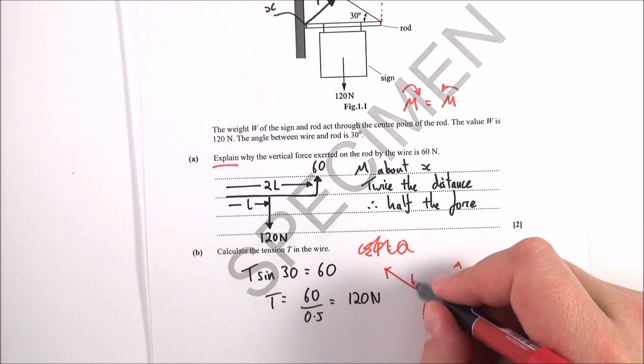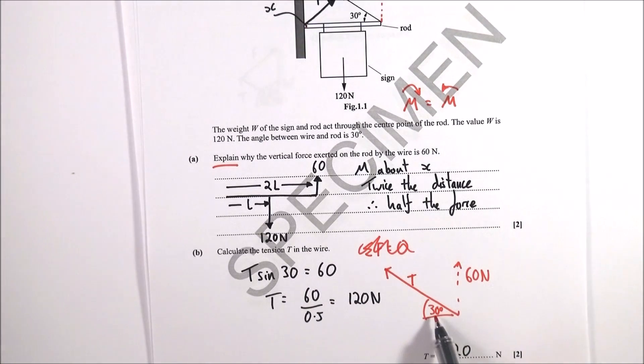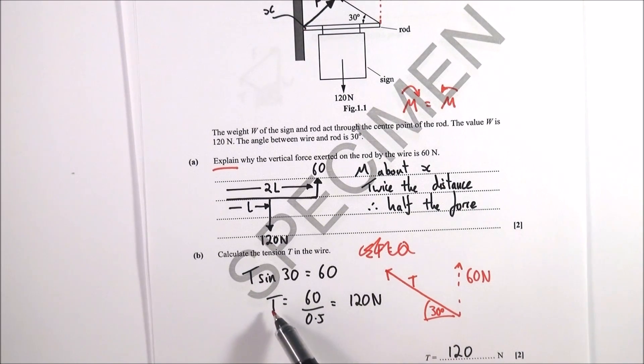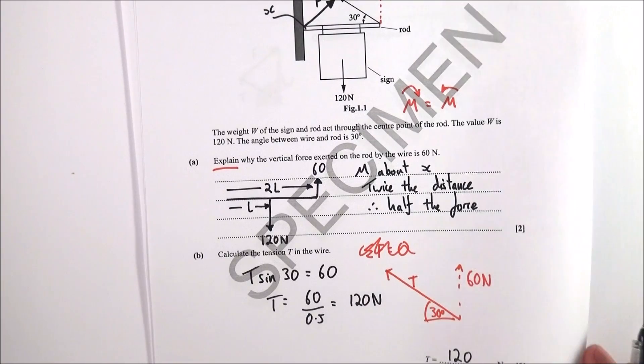So in order to find the value of T we know that T sine 30 is equal to 60 which is what I've said over here. So therefore T is equal to 60 over sine 30, which you should probably recall sine 30 is equal to 0.5, and therefore the tension happens to be 120 newtons. So that is part b.